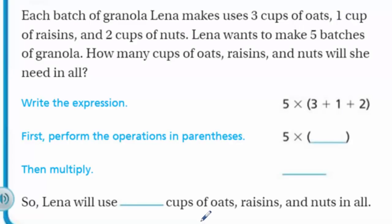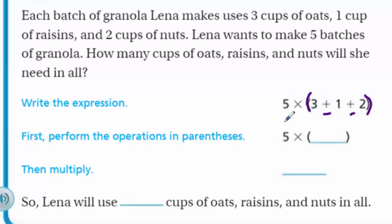Example: each batch of granola Lena makes uses 3 cups of oats, 1 cup of raisins, and 2 cups of nuts. Lena wants to make 5 batches. How many cups of oats, raisins, and nuts will she need in all? We write the expression: 5 times the sum of 3, 1, and 2 — parentheses because there are addition signs inside. We have the five because we need to make 5 batches, just like tripling, but 5 times as much.